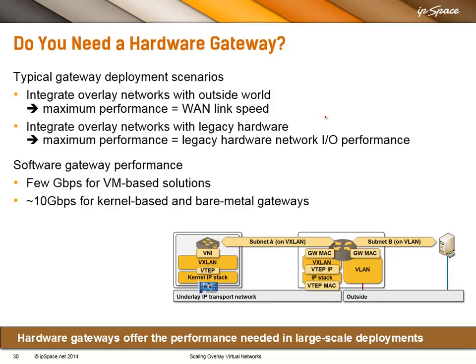In some cases, particularly if you don't have an SDN controller, integrating a gateway with the overlay virtual networking solution might become a do-it-yourself exercise or sometimes even mission impossible — in which case you might be better off with VM-based appliances. For software, gateway performance is usually in a few gigabit range, approximately 10 gig for kernel-based and bare metal gateways. Hardware gateways usually do this at line rate, which means terabit or more.